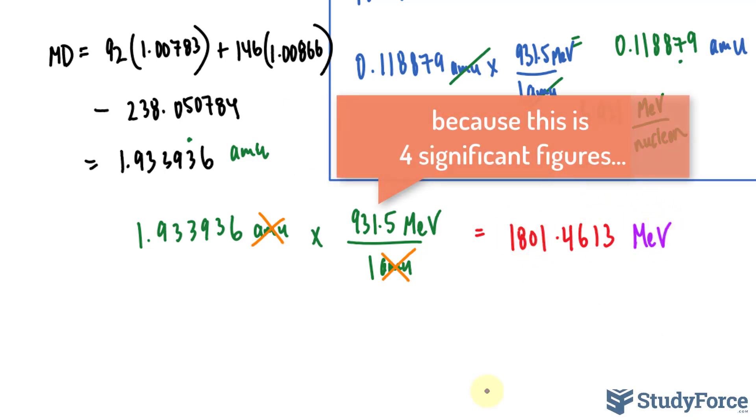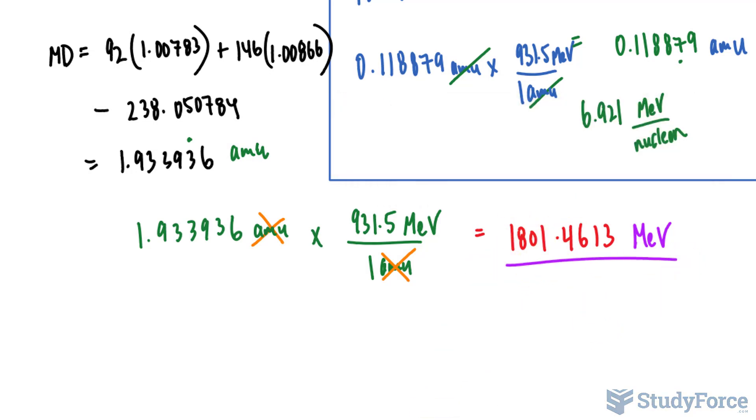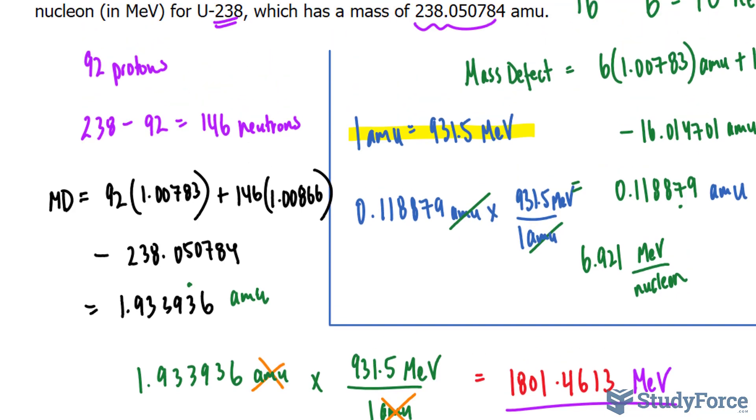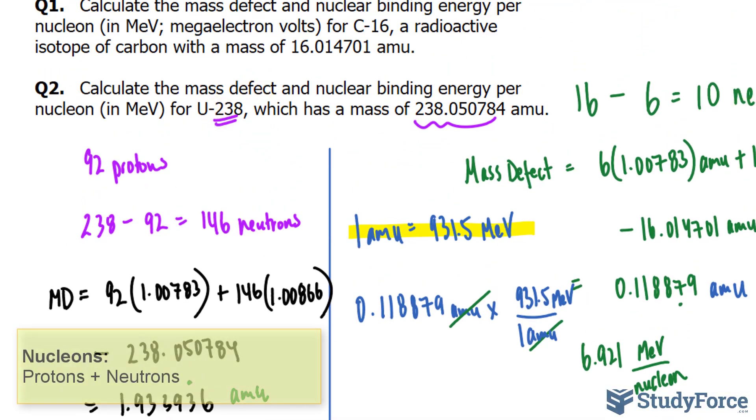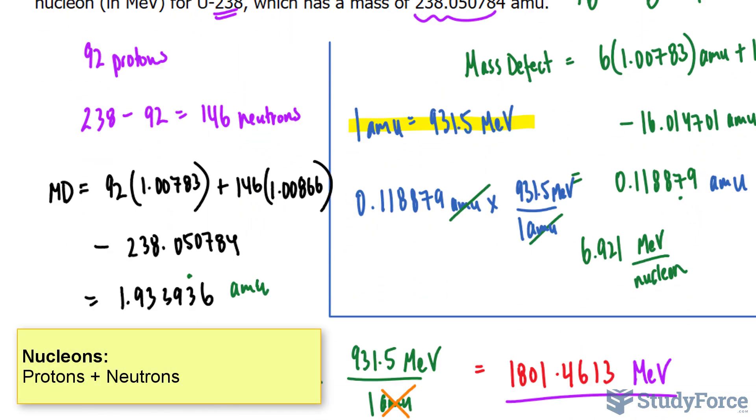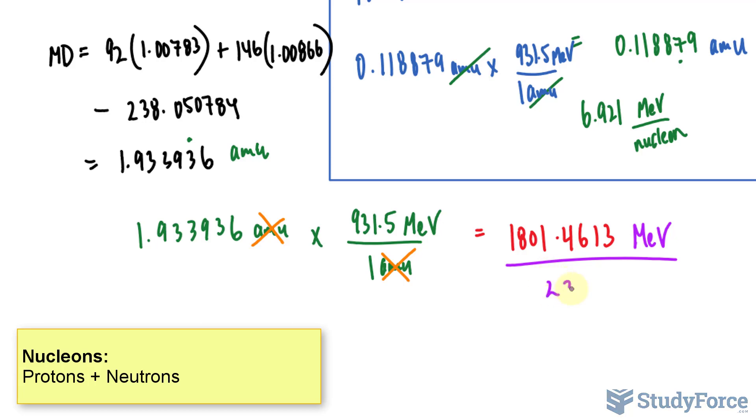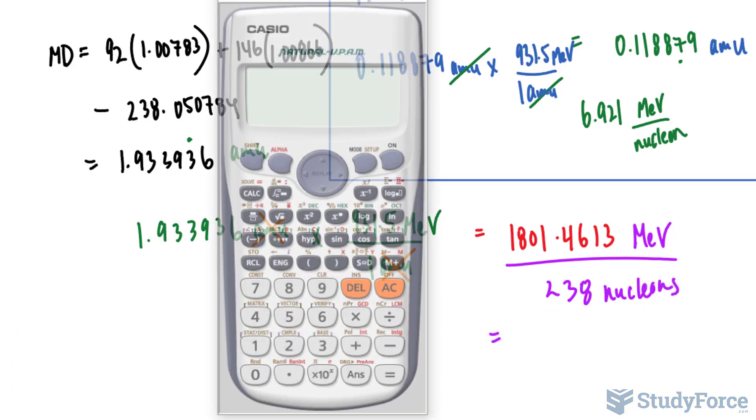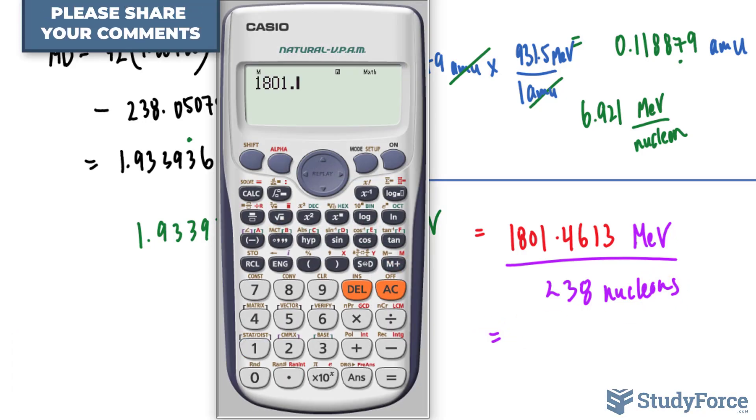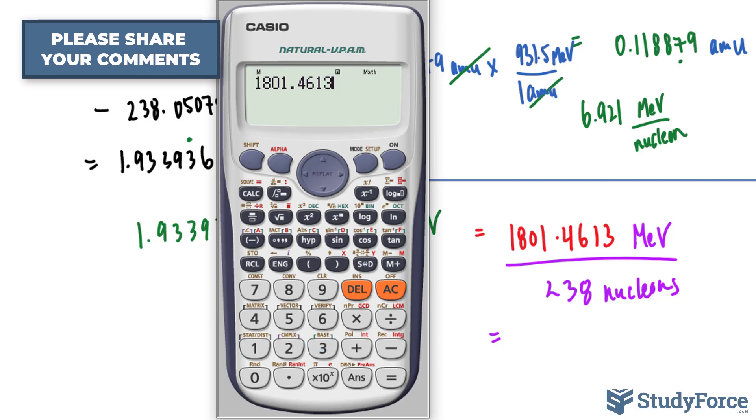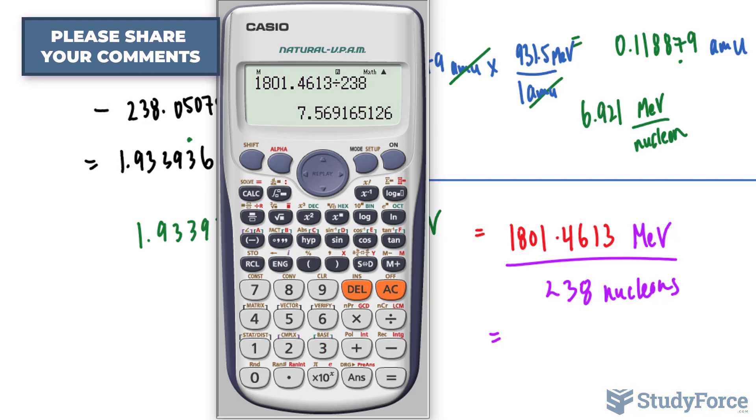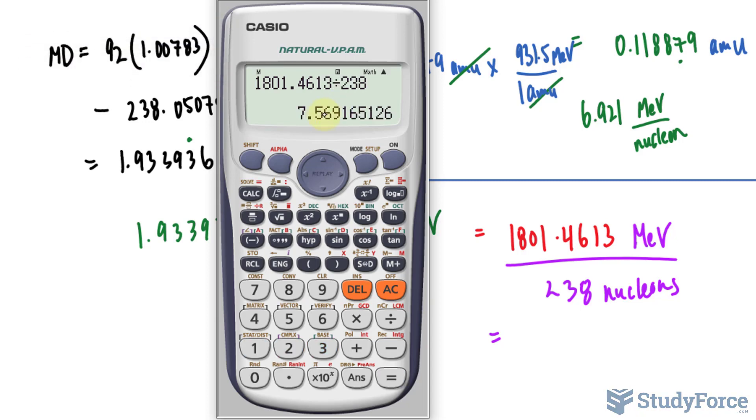It should go to four significant figures. But the last step is to divide this by the nucleons, which for us represents the mass number of 238. So we'll divide this by 238 nucleons. And let's go ahead and do that. So that number, 1801.4613, divided by 238. And we will round this to four significant figures.